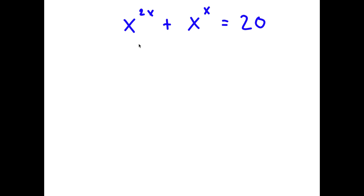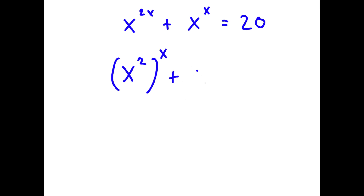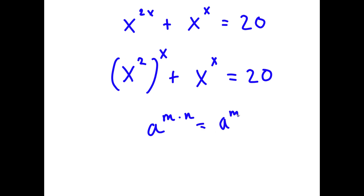In this problem, I have x to the power of 2x plus x to the power of x is equal to 20. I'm going to first rewrite x to the power of 2x as x to the power of x to the power of 2, because a to the power of m times n is the same thing as a to the power of m to the power of n.